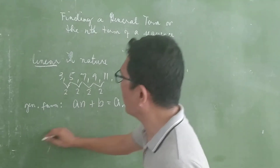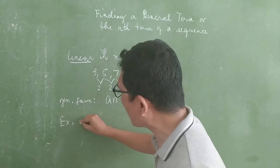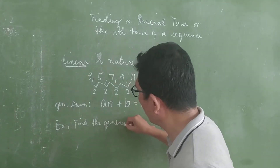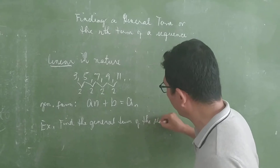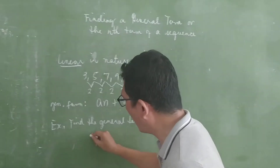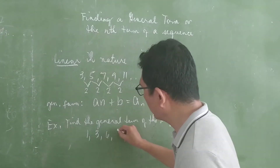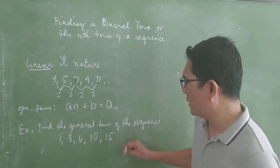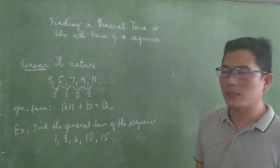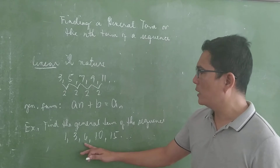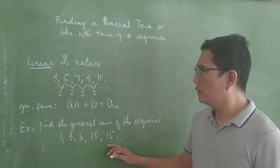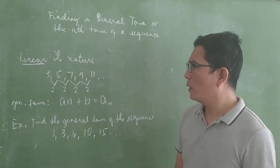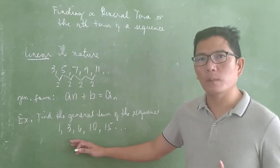Now, take a look at this sequence. You are asked to find the general term of the sequence: 1, 3, 6, 10, 15, and so on. If you observe 1, 3, 6, 10, 15 — there is no common difference, meaning the next term is not obtained by adding a constant.